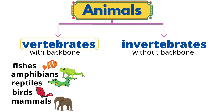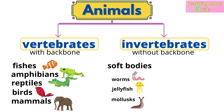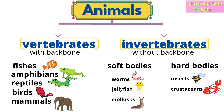There are many groups of invertebrates too. They include invertebrates with soft bodies such as worms, jellyfish, and mollusks like slugs and squids. There are also groups of invertebrates with hard bodies such as insects, crustaceans like crabs and shrimps, and spiders.